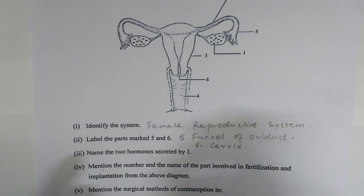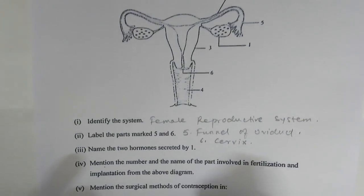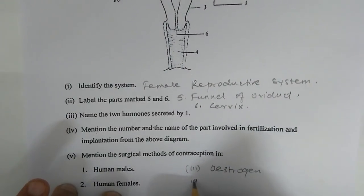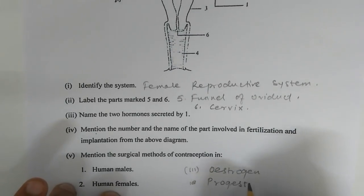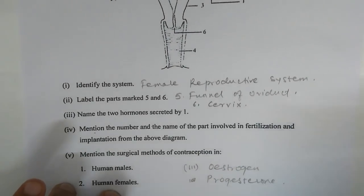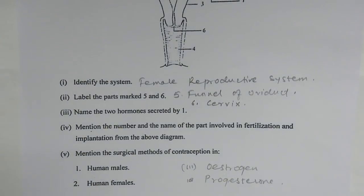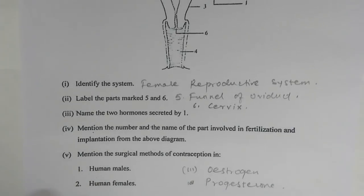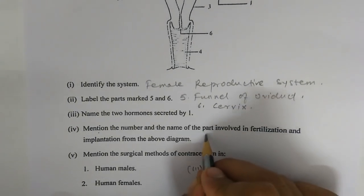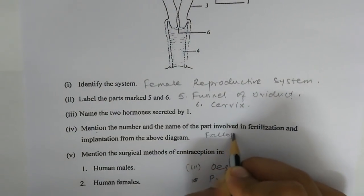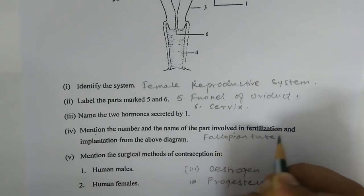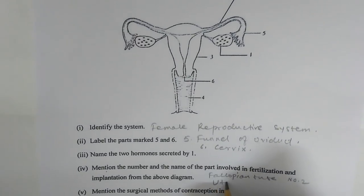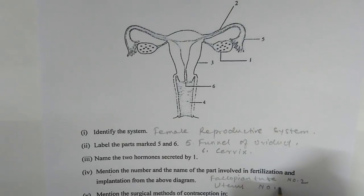Name the two hormones secreted by part one (the ovary): oestrogen and progesterone. Number four — mention the part involved in fertilization and implantation. For fertilization, the part involved is the fallopian tube marked as number two. For implantation, the part involved is the uterus, marked number three.